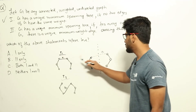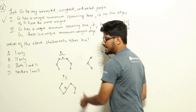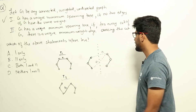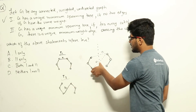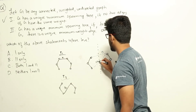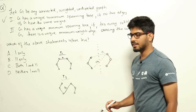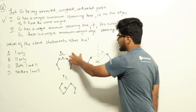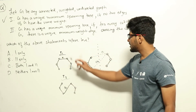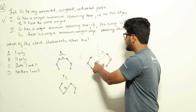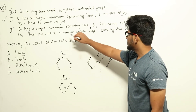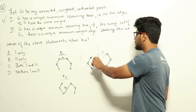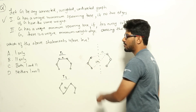In T1, we use edge e1 to connect the two cuts and obtain the minimum spanning tree. In T2, we use some other edge e2 connecting those two cuts to obtain the minimum spanning tree. If T1 and T2 are both minimum spanning trees, then all other edges are the same; only e1 and e2 differ. This means e1 and e2 must have the same edge weight. But the statement says there is a unique minimum weight edge crossing every cut — that is a contradiction, since we have two edges with the same minimum weight.